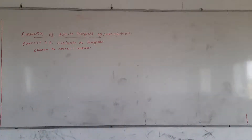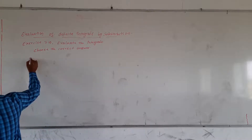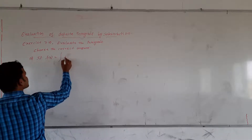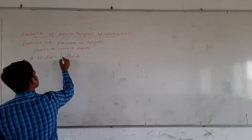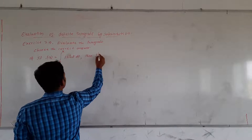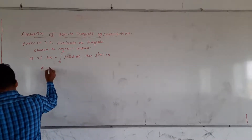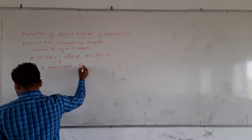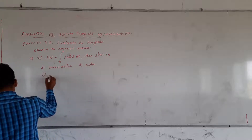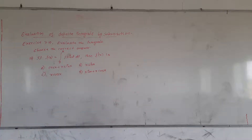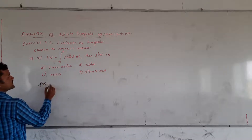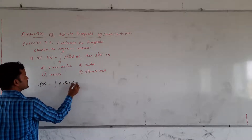Now, going to the last problem, question number 10. If f(x) is equal to the integration of t · sin(t) dt from 0 to x, then f'(x) is equal to — option A: cos x + x · sin x, option B: x · sin x, option C: x · cos x, option D: sin x + x · cos x. f(x) is equal to the integration of t · sin(t) · dt from 0 to x.